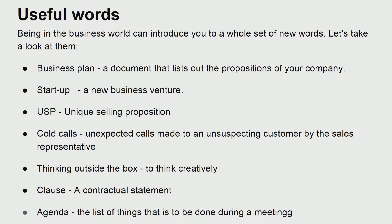A business plan is a document that lists out the propositions of your company. A startup, as most of you know, is a new business venture. USP is a unique selling proposition — not just for a company but also for a person, who can have their own USP. Cold calls are unexpected calls made to customers by a sales representative. Thinking outside the box means to think creatively. A clause is a contractual statement, and an agenda is the list of things to be done during a meeting.